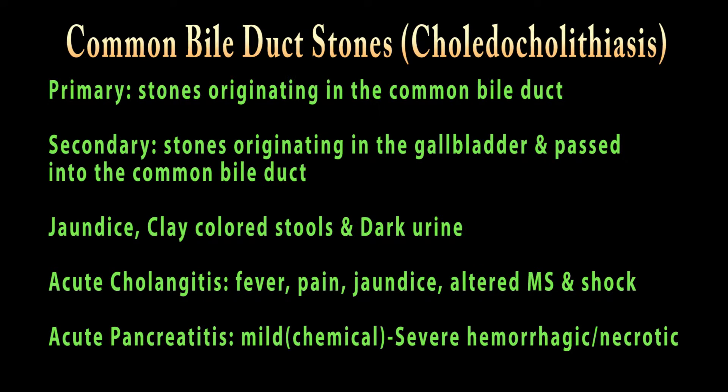Common bile duct stones, or choledocholithiasis, can be divided into two types: primary and secondary. It is characterized by jaundice — a yellowish discoloration of the skin and the white of the eye, or sclera — clay-colored stools, and dark urine.